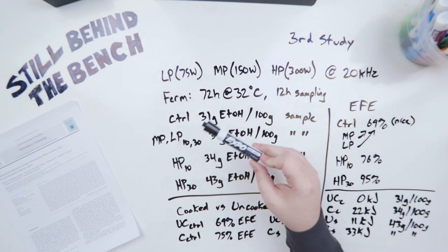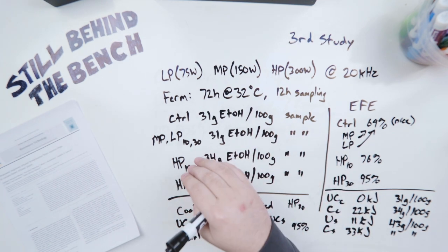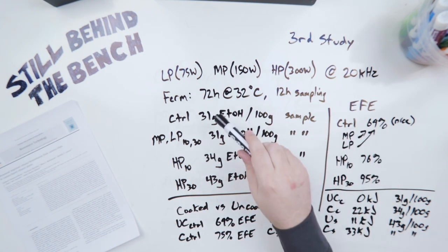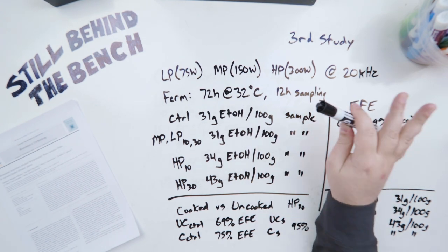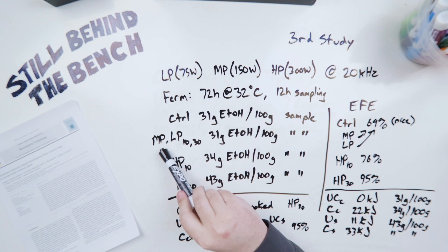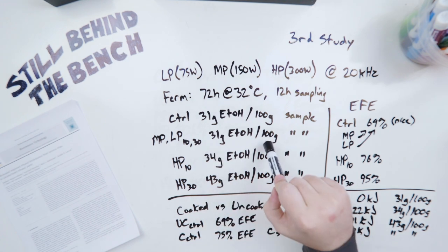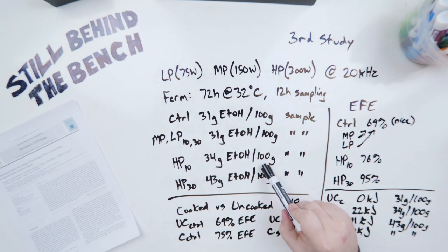Before I get into the results I want to explain one of the terms I'll be using. It's called ethanol fermentation efficiency. To get this value they essentially measured the starch in the cassava and then calculated how much ethanol they could get if they could convert all the starch into glucose and then ferment all the glucose into ethanol. Their fermentation took 72 hours but the sonicated samples actually started to plateau after 48 hours. Their samples themselves, their control generated 31 grams of ethanol per 100 grams of sample. The medium power and low power both at 10 seconds and 30 seconds also only generated 31 grams of ethanol per 100 grams of sample.